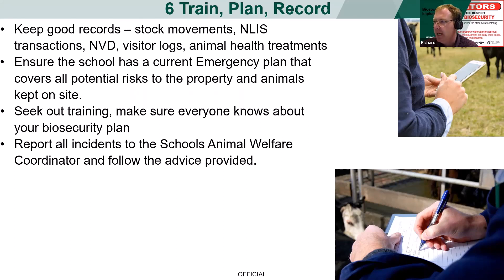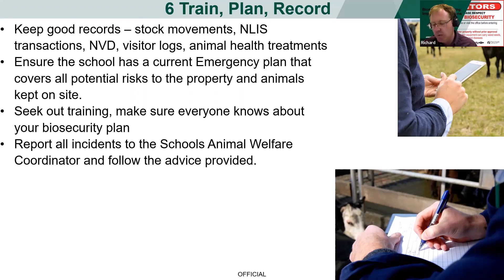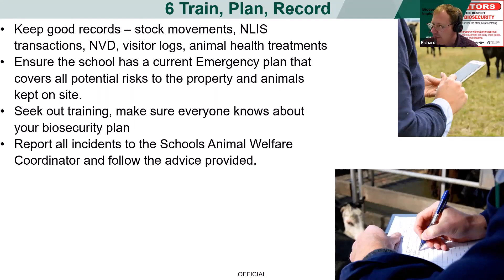For schools, make sure you have a current emergency plan that covers all potential risks to the property and animals kept on site — everything from fires to floods to an emergency animal disease outbreak. Seek out training — Victoria has a series of training modules you can utilise, and there are modules in other states and territories as well. There are FMD awareness courses online from Animal Health Australia. If you do have farm staff, make sure training is offered to them, as well as records on vaccinations — things like Q fever vaccinations might be required as they could pose a risk.